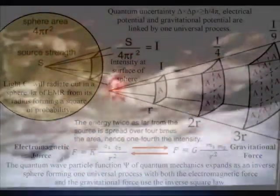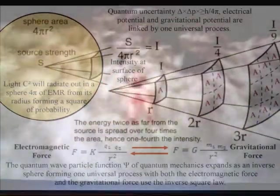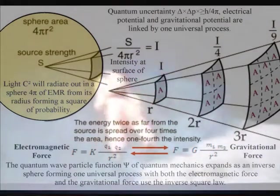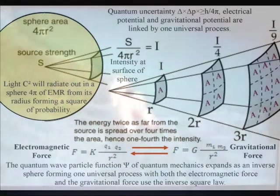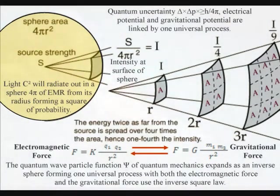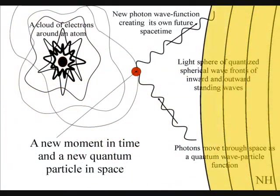I believe this can be seen in the mathematics, with both the gravitational force and the electromagnetic force having the inverse square law. We have the inverse square law because the surface area of the light sphere increases with the square of the radius, thus the strength of the gravitational field is inversely proportional to the square of the distance from the source. There is no mysterious action at a distance — the gravitational field will work at the speed of light because it is an integral part of one universal process with the electromagnetic force.